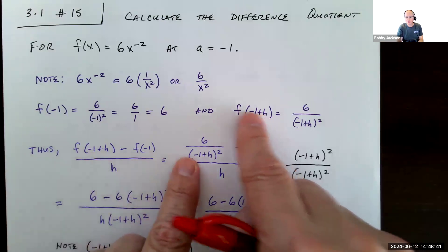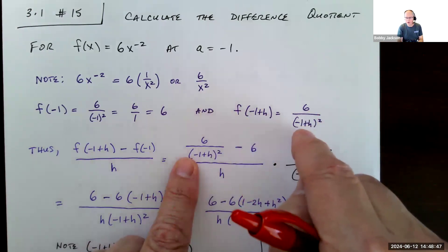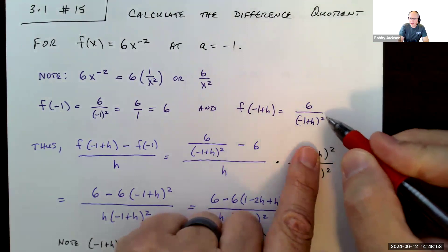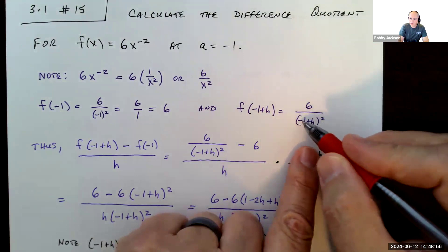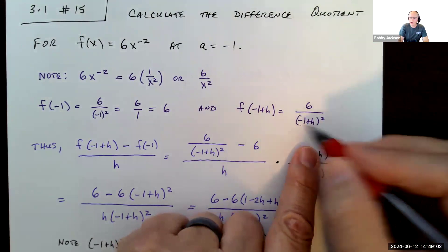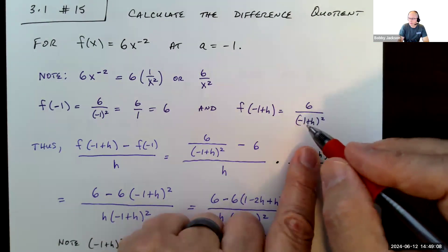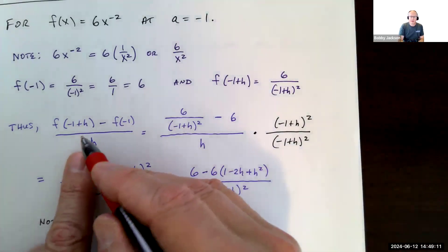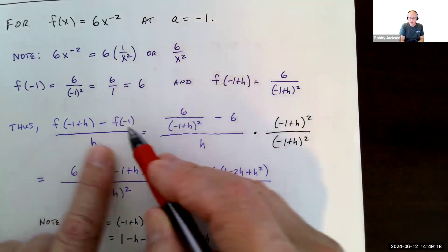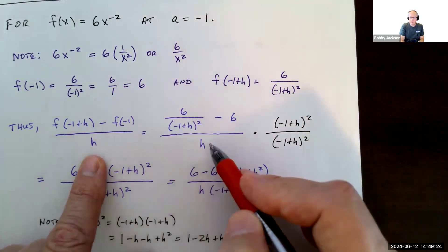And then I also need f of negative 1 plus h. Notice f of negative 1 plus h, I just replace x with negative 1 plus h. I'm just plugging that in. So it's 6 divided by the quantity negative 1 plus h all squared. I'm going to leave that alone. I'm not going to expand that out right now. So let's evaluate the difference quotient. f of negative 1 plus h is this whole thing minus 6 all over h.